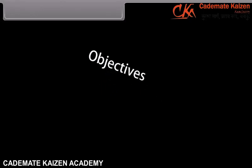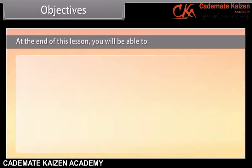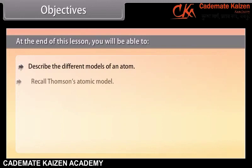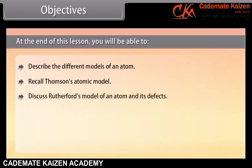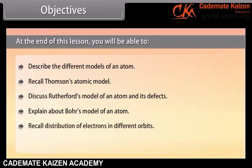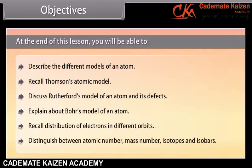Objectives. At the end of this lesson, you will be able to: describe the different models of an atom; recall Thomson's atomic model; discuss Rutherford's model of an atom and its defects; explain about Bohr's model of an atom; recall distribution of electrons in different orbits; distinguish between atomic number, mass number, isotopes and isobars.